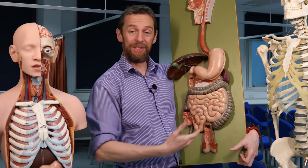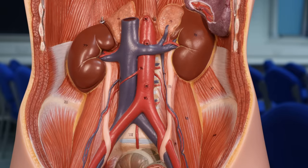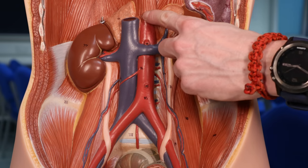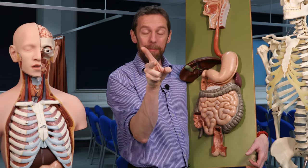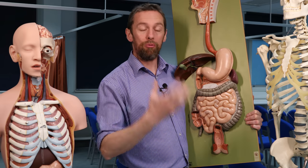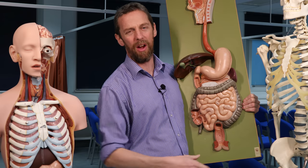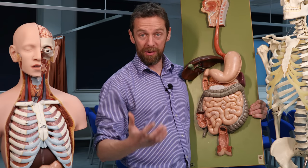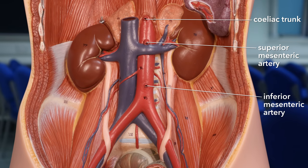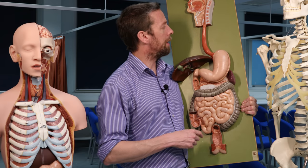The aorta is the big artery descending through the thorax and abdomen. The abdominal aorta has three anterior branches: the celiac trunk, superior mesenteric artery, and inferior mesenteric artery. We often talk about the blood supply in terms of embryological regions — foregut, midgut, and hindgut. The foregut is supplied by branches of the celiac trunk, the midgut by branches of the superior mesenteric artery, and the hindgut by branches of the inferior mesenteric artery.